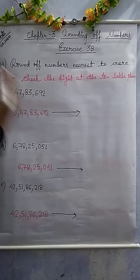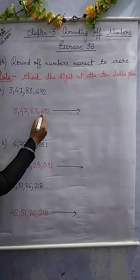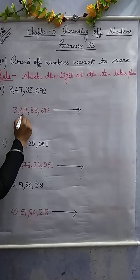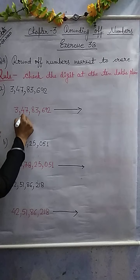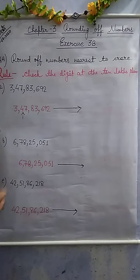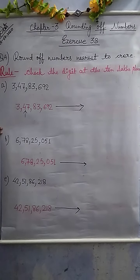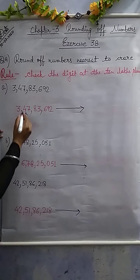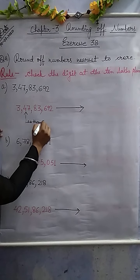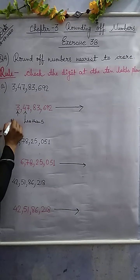So, counting from ones: ones, tens, hundreds, thousands, ten thousands, lakh, ten lakh. Here the digit at the 10 lakhs place is 4. To find the round off number, the process is the same as other questions. Here is 4, which is less than 5. So in this digit — no change.